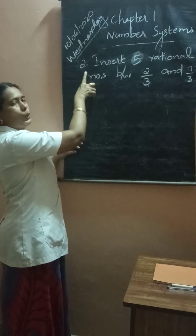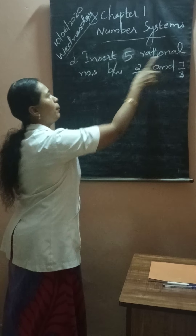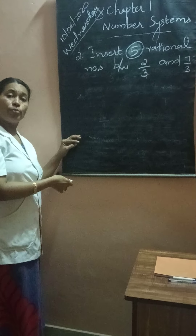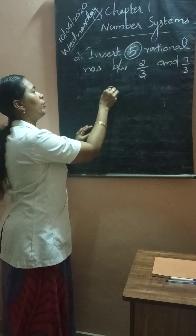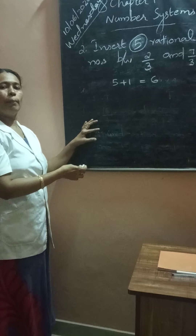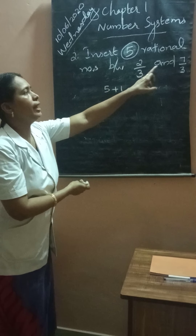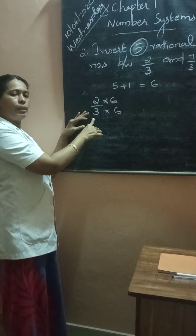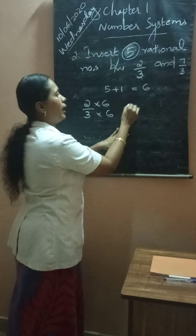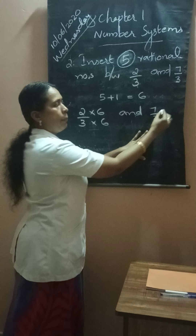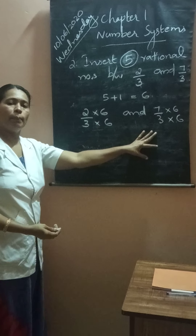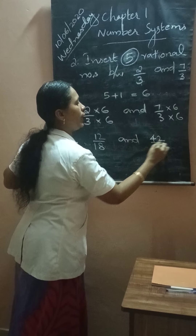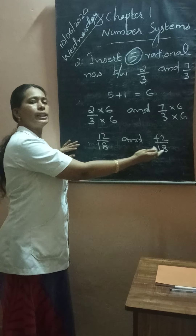Next, let us move to question number 2: insert 5 rational numbers between 2 by 3 and 7 by 3. Mark this — 5 rational numbers are required. So, 5 plus 1 equals 6. Now, multiply and divide by 6 with the given rational numbers. That is, 2 by 3 — multiply both numerator and denominator by 6. Similarly, 7 by 3 — multiply both numerator and denominator by 6. So we have 12 by 18 and 42 by 18, and we have enough numbers in between these two.